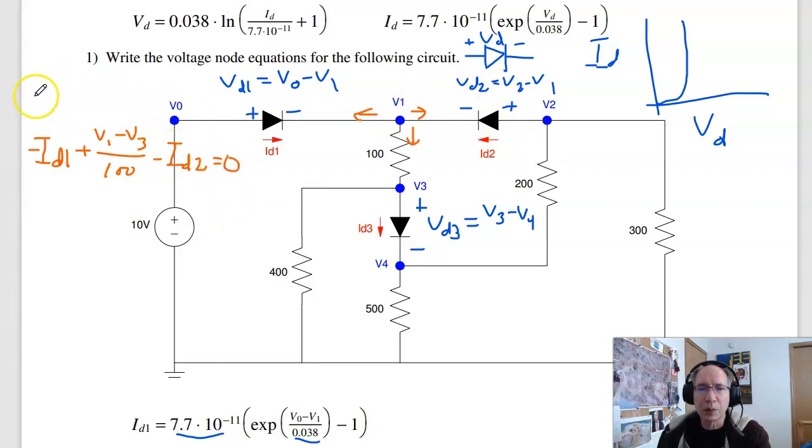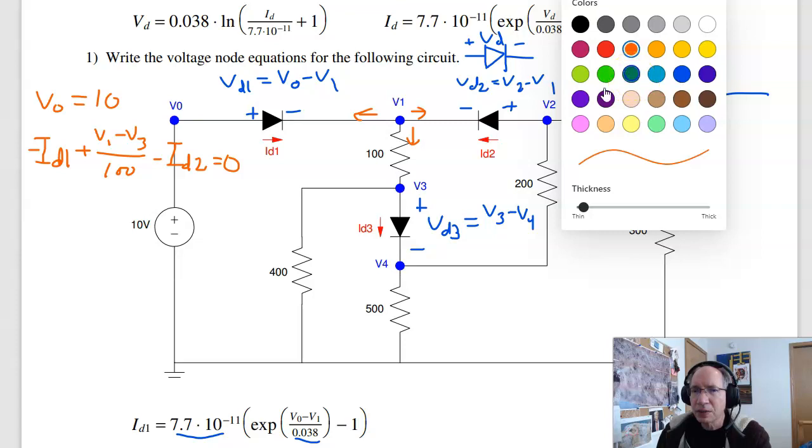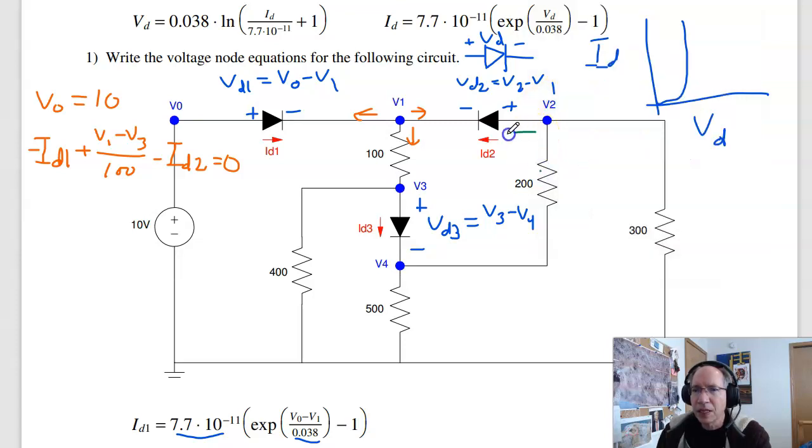That's 0. Actually, one more equation. At node 0, V0 equals 10. At node 2, current left, current down, current right equals 0. Current left is plus ID2. Current down is V2 minus V4 over 200. And this current is V2 minus 0 over 300.